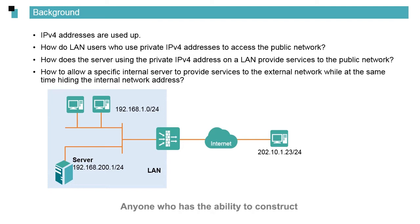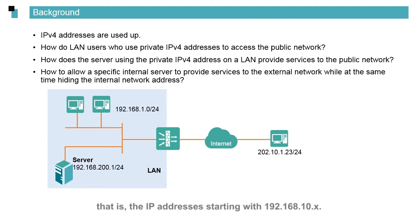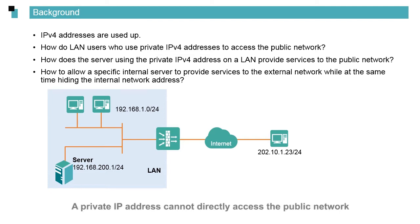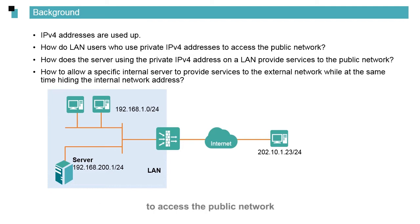These private IP addresses cannot access a public network, but anyone who has the ability to construct an IP network can use the private IPv4 address space — that is, IP addresses starting with 192.168.x. On a home network, a router functions as the gateway whose network adapter address is 192.168.1.0/24. This is a private IP address. A private IP address cannot directly access the public network, but NAT allows it to do so.